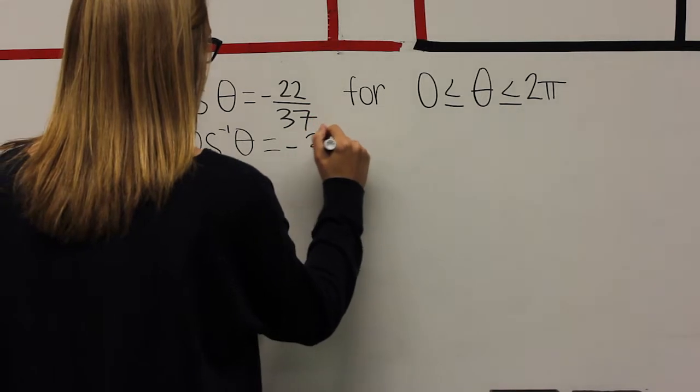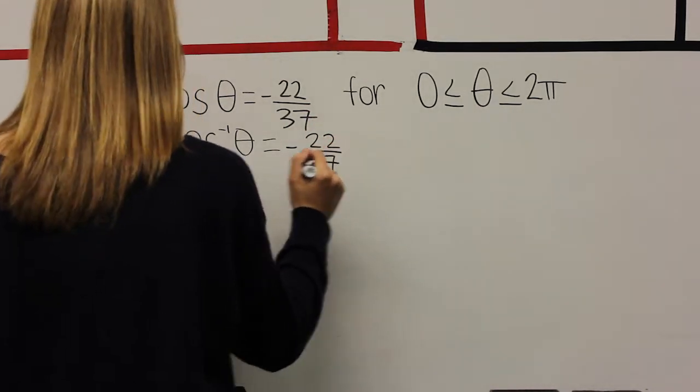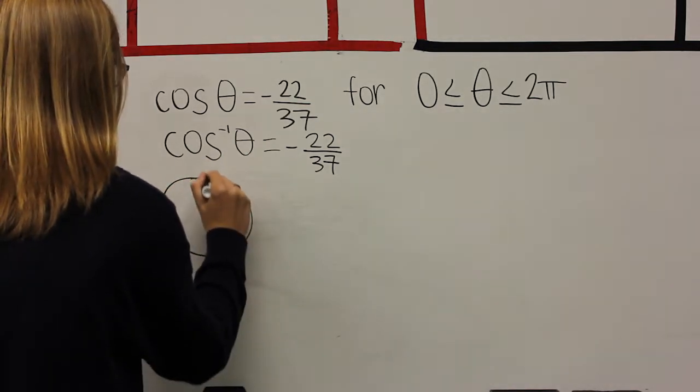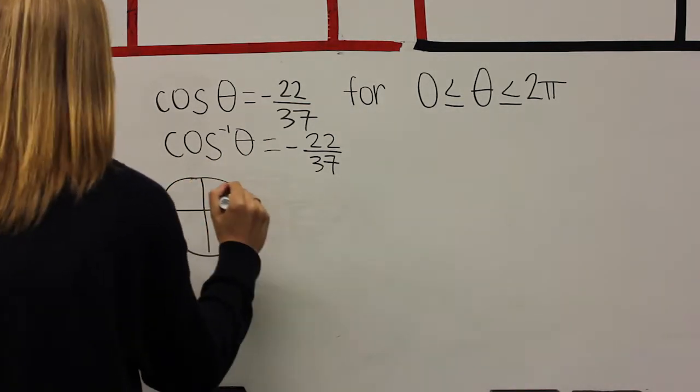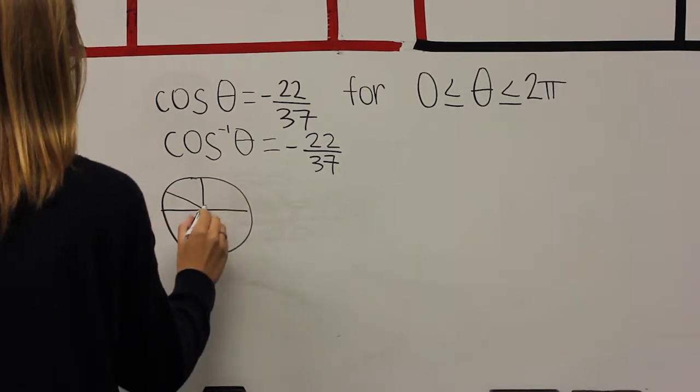Problem C. Cosine of negative 22 divided by 37. Type in the inverse cosine of negative 22 divided by 37. And your answer will be in quadrant 2. Take this answer and subtract it from 2 pi to find your second answer located in quadrant 3.